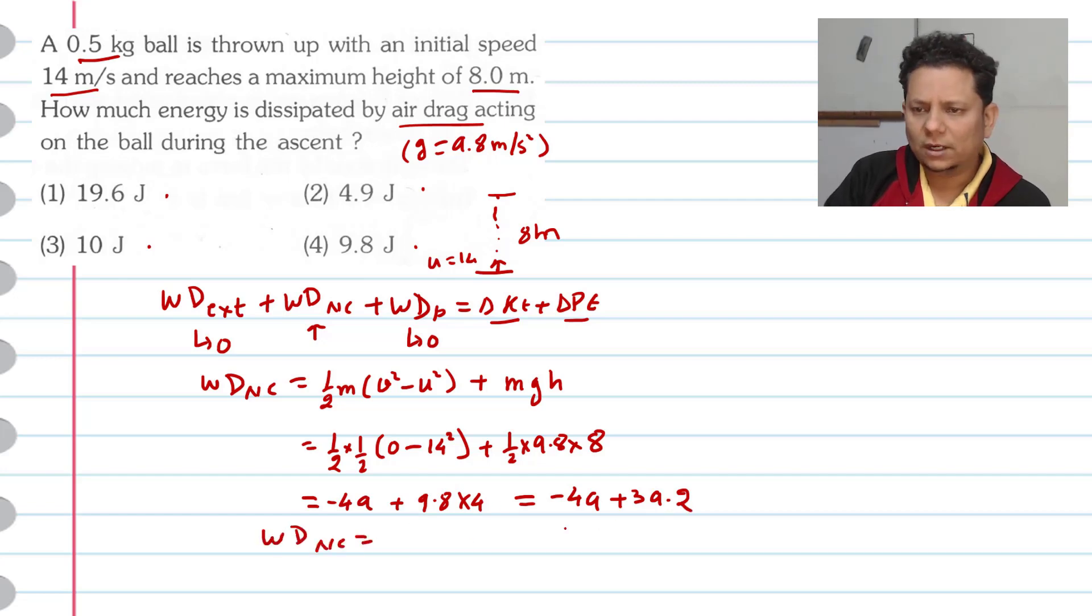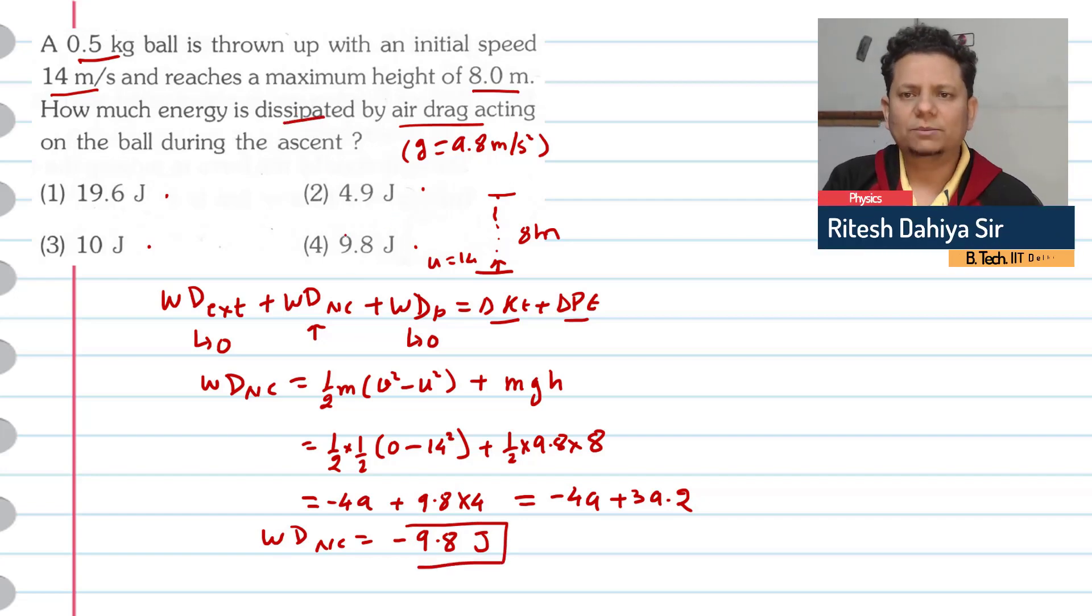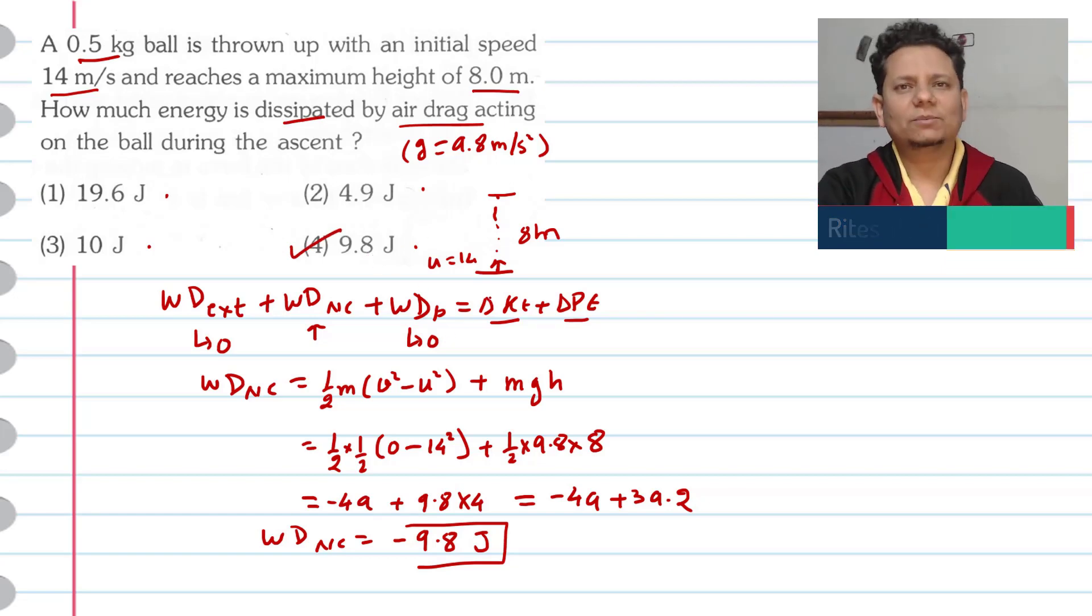That is, work done by non-conservative force - subtracting - so this equals minus 9.8 joule. So the work done by non-conservative forces - this much energy is dissipated. Hence option number 4, 9.8 joule would be the right answer. I hope the solution is clear to you.